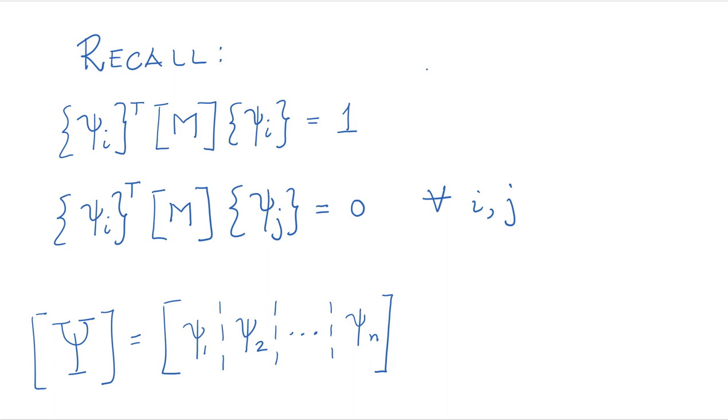And when the modes are different, phi i transpose M phi j equals to zero for all i and j that are not the same, for all i and j when i is obviously not equal to j.